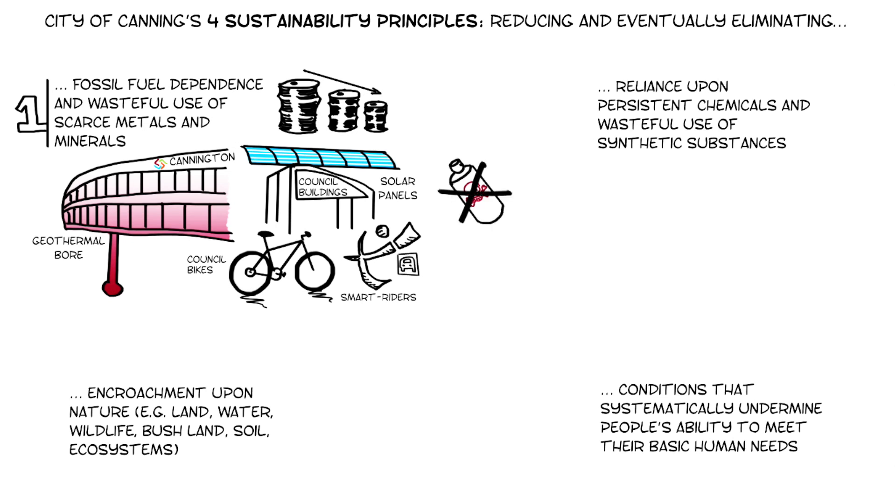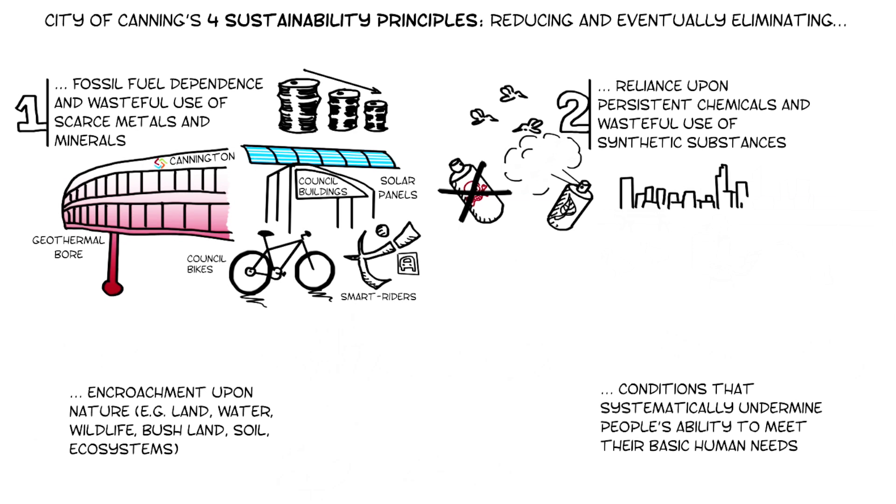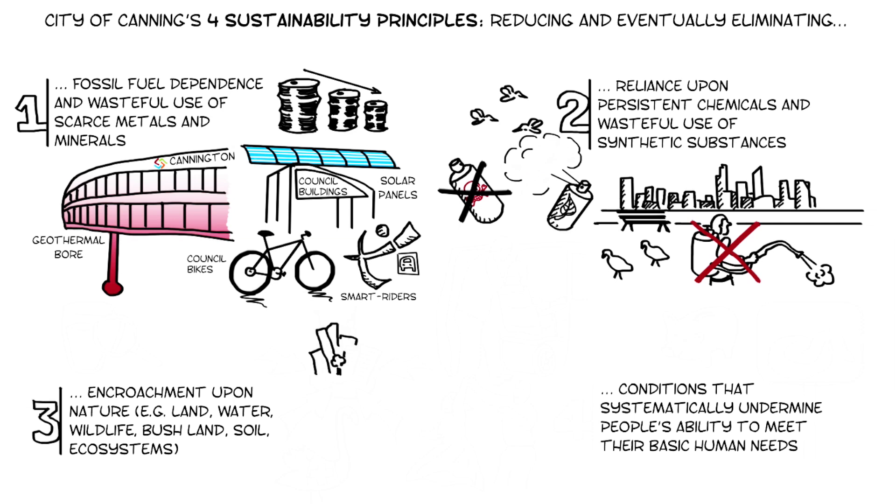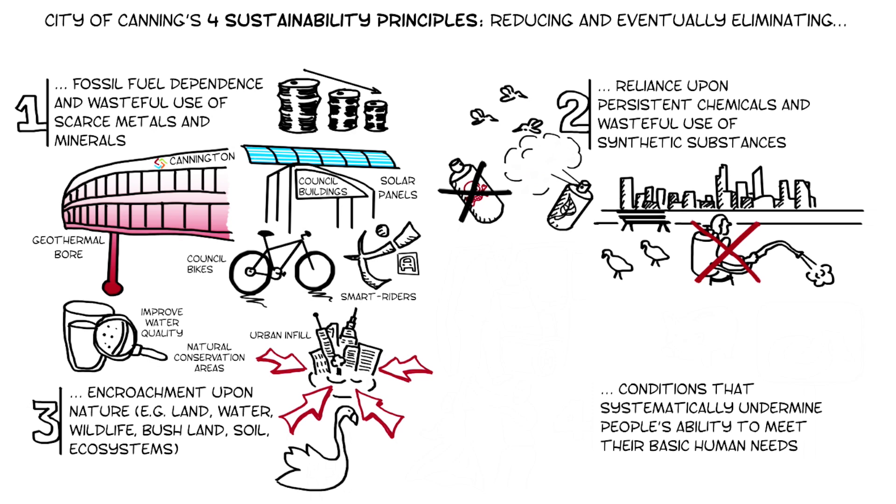To reduce our use of toxic and persistent chemicals, we've changed the way we manage mosquitoes to use substances that nature can break down more easily. And we've stopped fertilizing some of our key river foreshores to reduce the on-flow to our river systems. To reduce our encroachment upon nature, we're creating a framework to encourage urban infill in the city and reduce urban sprawl. We govern the waste disposal of our industrial areas to reduce pollution into our waterways. We work to protect, maintain, and expand our natural conservation areas, and we do a lot of wetland restoration, which improves water quality and provides habitat for native wildlife.